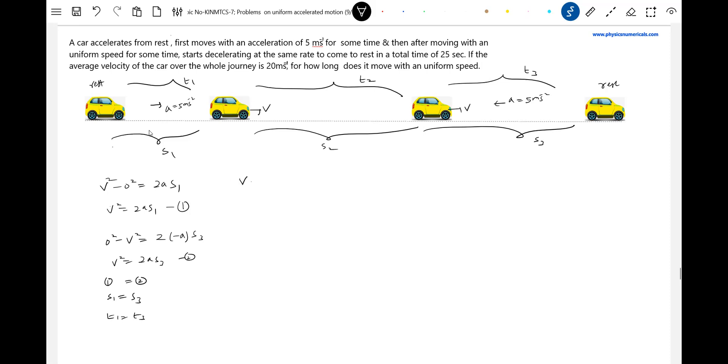Average velocity is defined as total distance covered S1 plus S2 plus S3 divided by T1 plus T2 plus T3. This becomes 2S1 plus S2 divided by 2T1 plus T2. V equals S2 by T2. Total time of journey we know is 25 seconds.